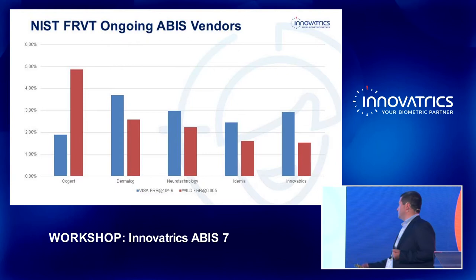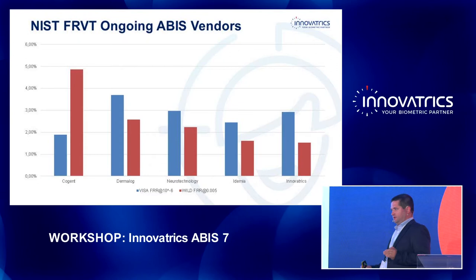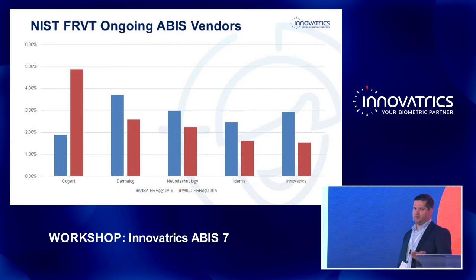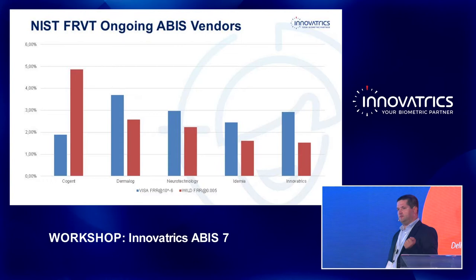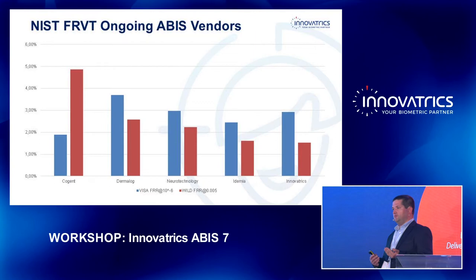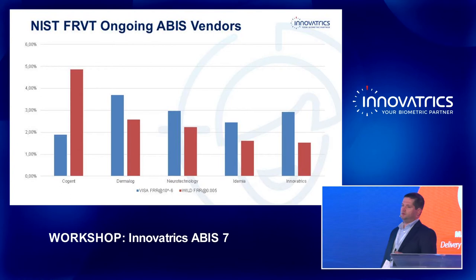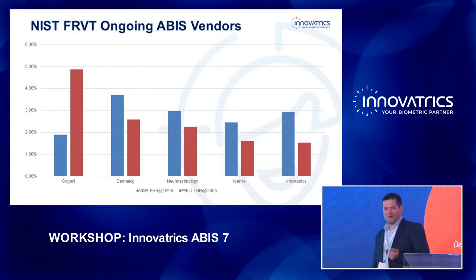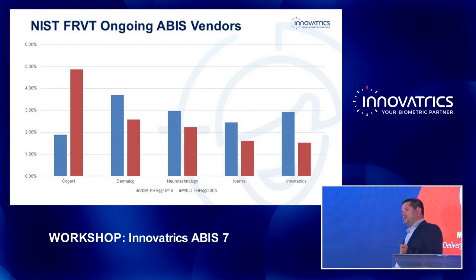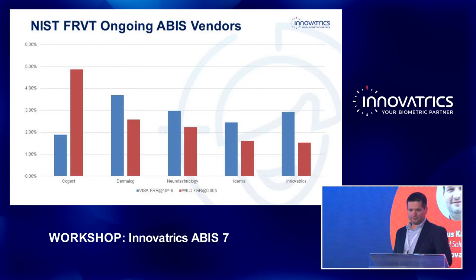In the Visa category there is still room to improve, but the results are more or less similar. That's why it's even more important how fast you can get the benchmarked algorithm into a real production system. Before some companies can integrate a new algorithm in days or weeks, others can take a year or two. We present ourselves as an agile company — once we submit our algorithm to the benchmark, we integrate it into our product almost immediately so you can get it into your production system.